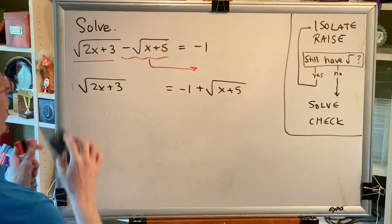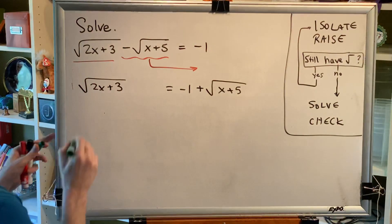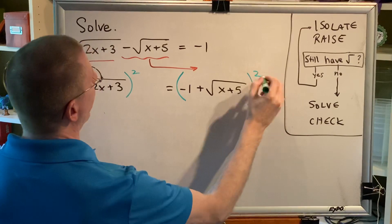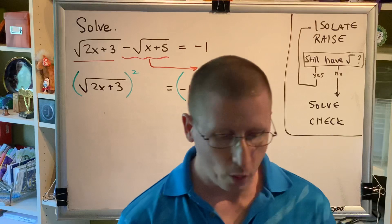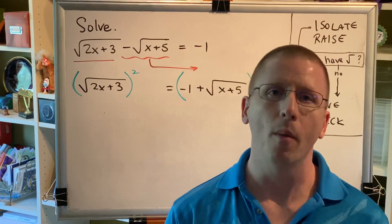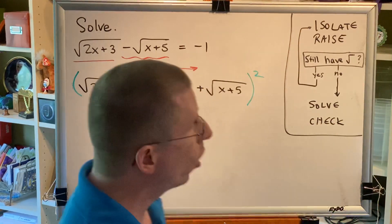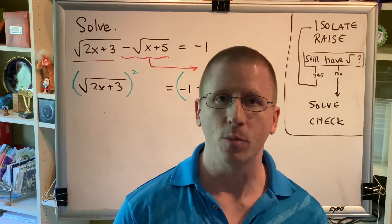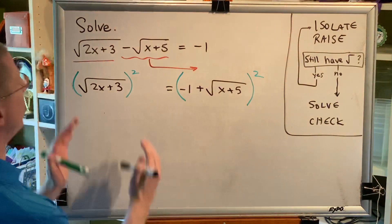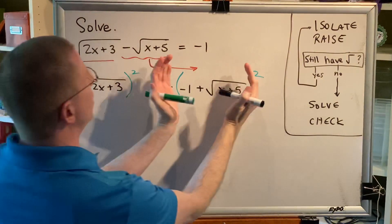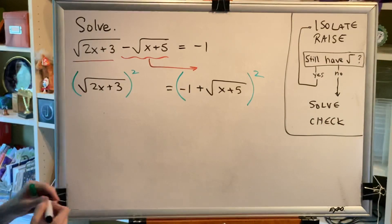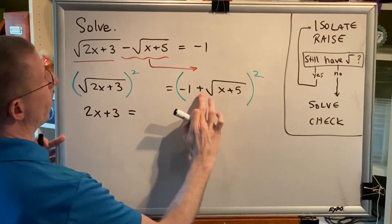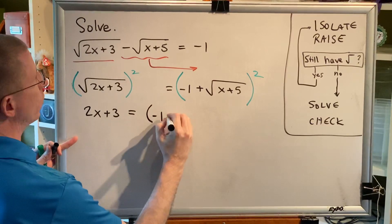That moves us on to step 2: raise. The index of the isolated radical is 2 — it's a square root — so we're going to raise the whole left side to the second power and the whole right side to the second power. This problem is more challenging than the previous ones, and if students are going to make a mistake, now is the moment. What I don't want you to do is raise this radical, this negative 1, and this radical separately to the second power — that is not a valid algebraic method. What I do want you to do is put the entire left side in parentheses and raise it to the power 2, and put the entire right side in parentheses and raise it to the power 2. On the left, the square and the square root cancel, leaving us 2x plus 3. But on the right, when a base is raised to an exponent and there's adding or subtracting inside, we have to use FOIL.